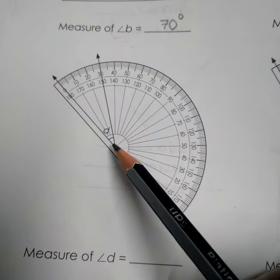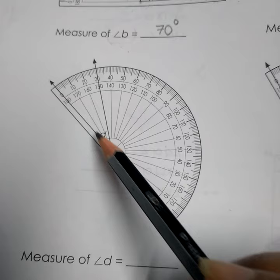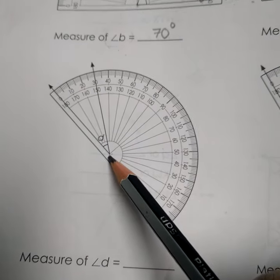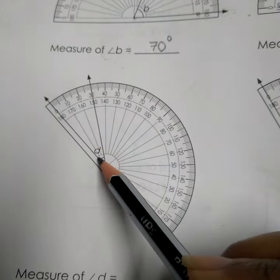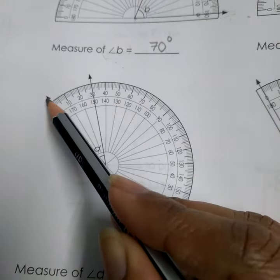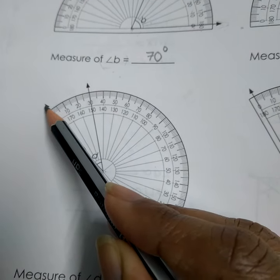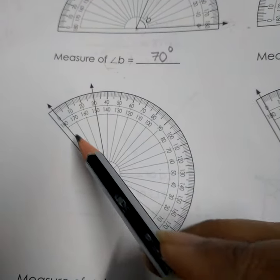One ray of the angle and the baseline should also coincide. Now we will look at this arrow. This arrow is pointing towards left.